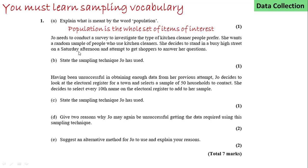Jo needs to conduct a survey to investigate the type of kitchen cleaner people prefer. She wants a random sample of people who use kitchen cleaners. She decides to stand in a busy high street on a Saturday afternoon and attempt to get shoppers to answer questions. This is called opportunity or convenience sampling — just picking people as they come out, very convenient for her to get questionnaire responses.